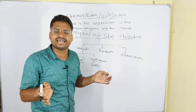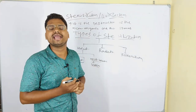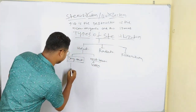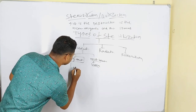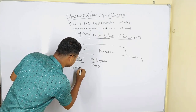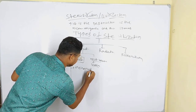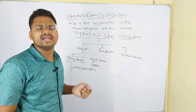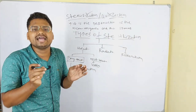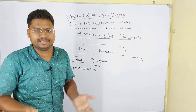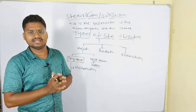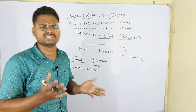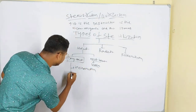Dry heat sterilization is divided into four different categories. First is incineration — I-N-C-I-N-E-R-A-T-I-O-N — which means burning. We have to burn something; that is called incineration.